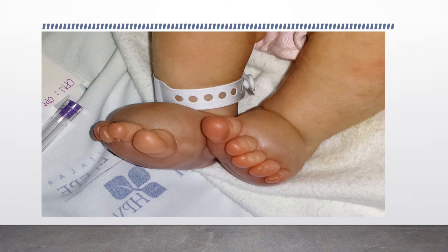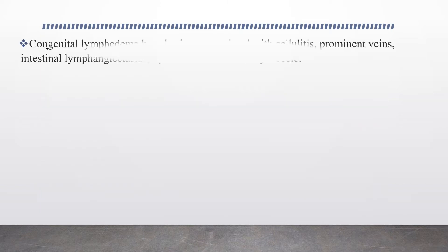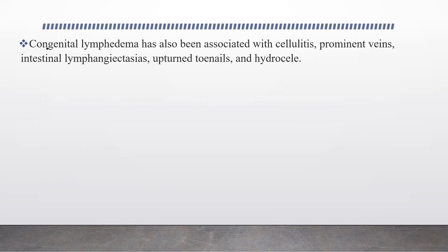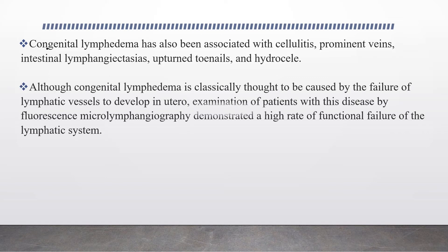This is an image of a patient with congenital lymphedema — the age of this newborn is around 28 days. Congenital lymphedema has also been associated with cellulitis, prominent veins, intestinal lymphangiectasias, aberrant tunnels, and hydrocele. Congenital lymphedema is classically thought to be caused by the failure of lymphatic vessels to develop properly. Examination by fluorescence micro-lymphangiography demonstrates a high rate of functional failure of the lymphatic system, which may contribute to the formation of edema.